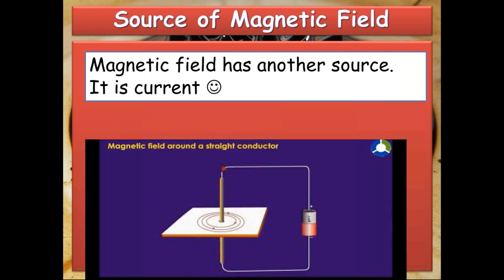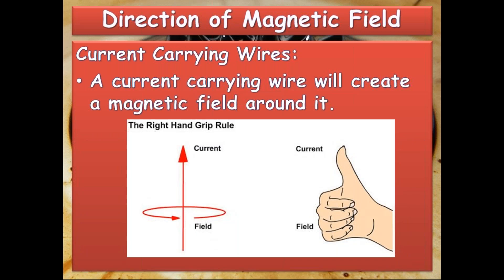Today we will learn another source of magnetic field. This source is called current. As you can see from this simple electric circuit, current is moving in this direction. Here you can see the magnetic field's direction is like a circle — current-carrying wires create a magnetic field in a circular shape like this. In order to find the direction of this magnetic field, we use the right-hand rule. You just need to point your thumb in the direction of the current and your curled fingers will show the direction of the magnetic field.